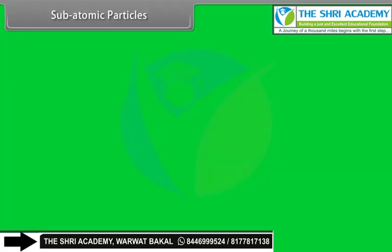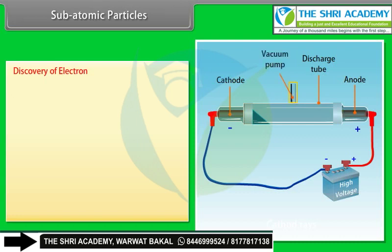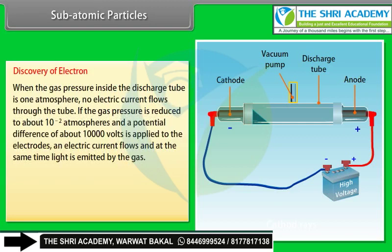Subatomic particles — Discovery of the electron. A discharge tube is a long glass tube fitted with metal electrodes on either end, across which high voltage can be applied. The tube is also connected to a vacuum pump for controlling the pressure of gas inside. There is a coating of phosphorescent material behind the anode. When the gas pressure inside is 1 atmosphere, no electric current flows through the tube.